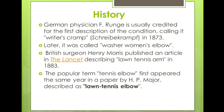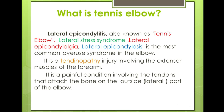In the history of tennis elbow, the German physician F. Runge described writer's cramp in 1873. Later it was called washerwoman's elbow, and finally in the year 1883, a paper by H.P. Major described it as lawn tennis elbow. Tennis elbow has many names: lateral epicondylitis, lateral stress syndrome, lateral epicondylalgia, lateral epicondylosis, and also tendinopathy.